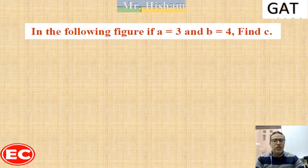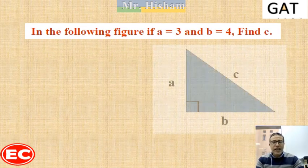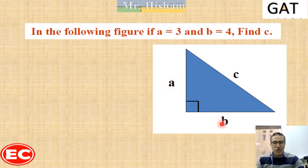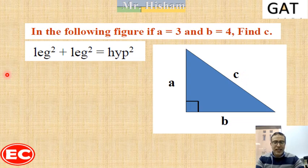Let's apply this theorem to triangle ABC in the given figure. If the length of A is equal to 3 and the length of B is equal to 4, I am looking for the length of C. So A is a leg, B is a leg, and C is the hypotenuse. Leg squared plus leg squared equals hypotenuse squared.